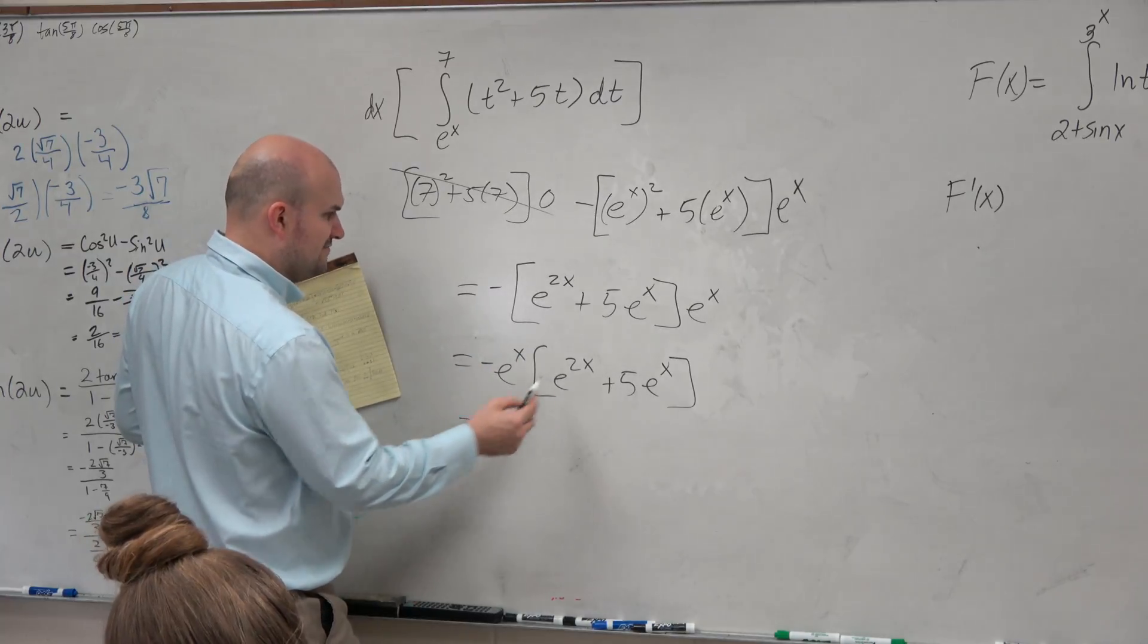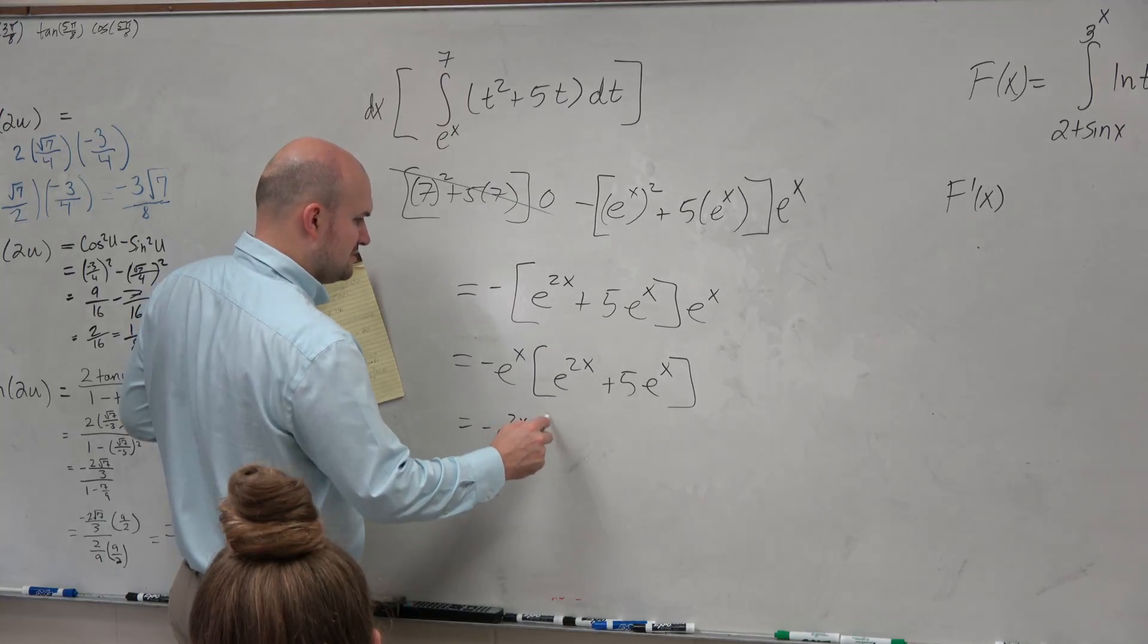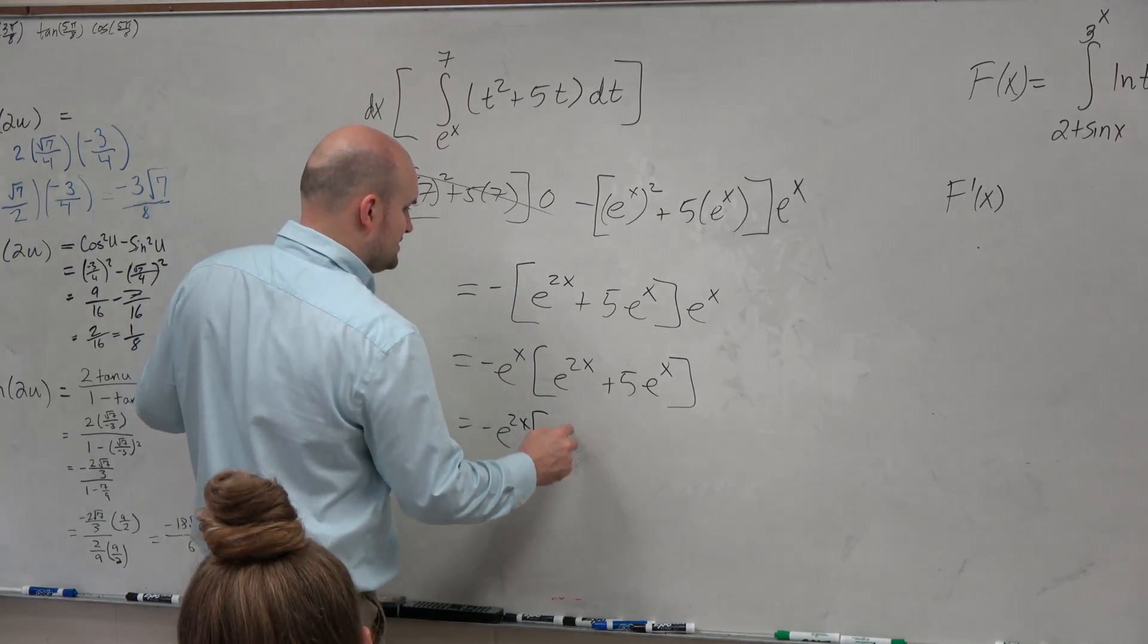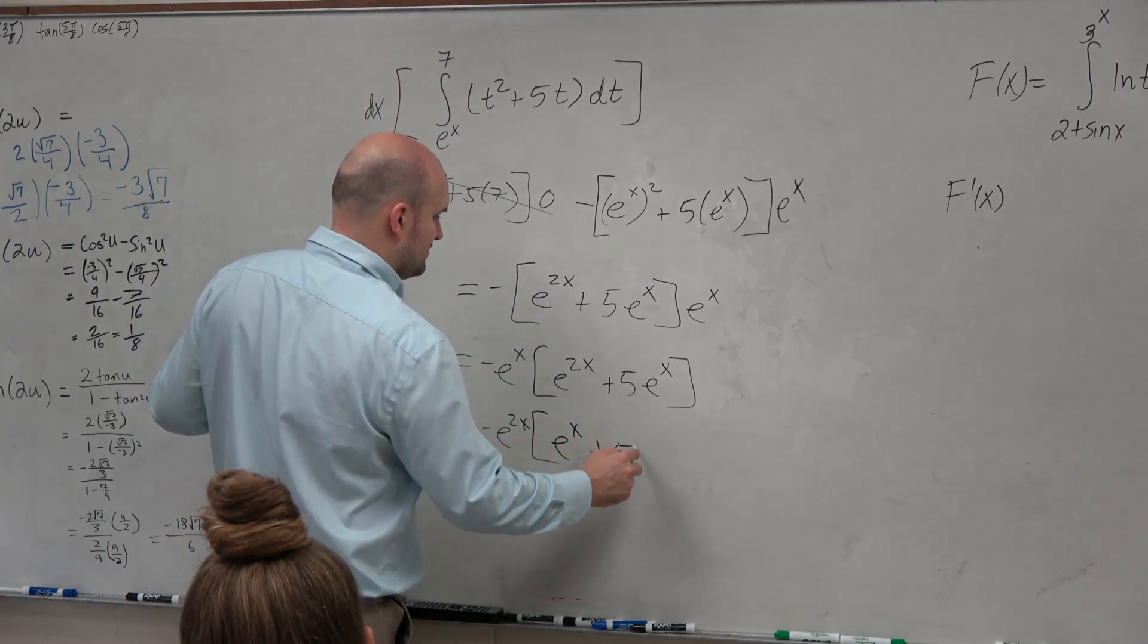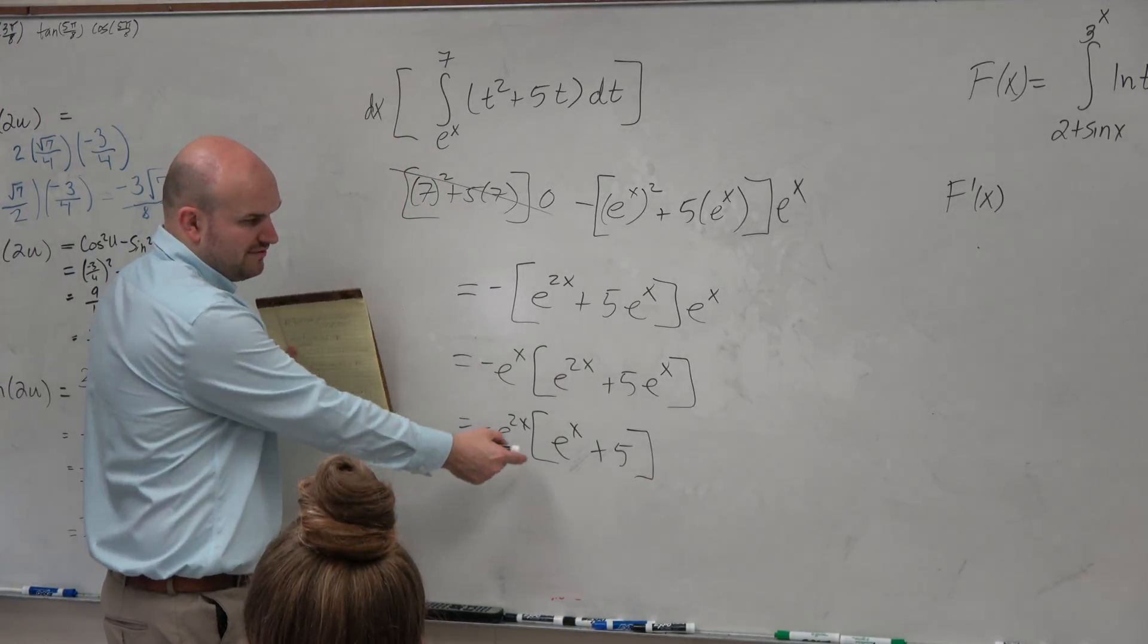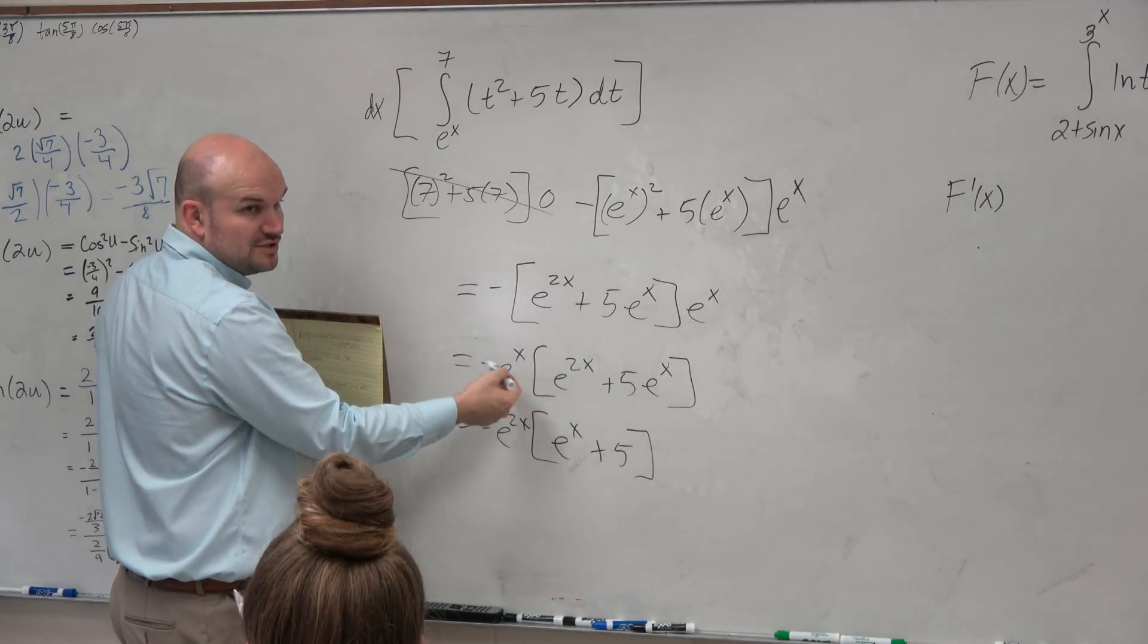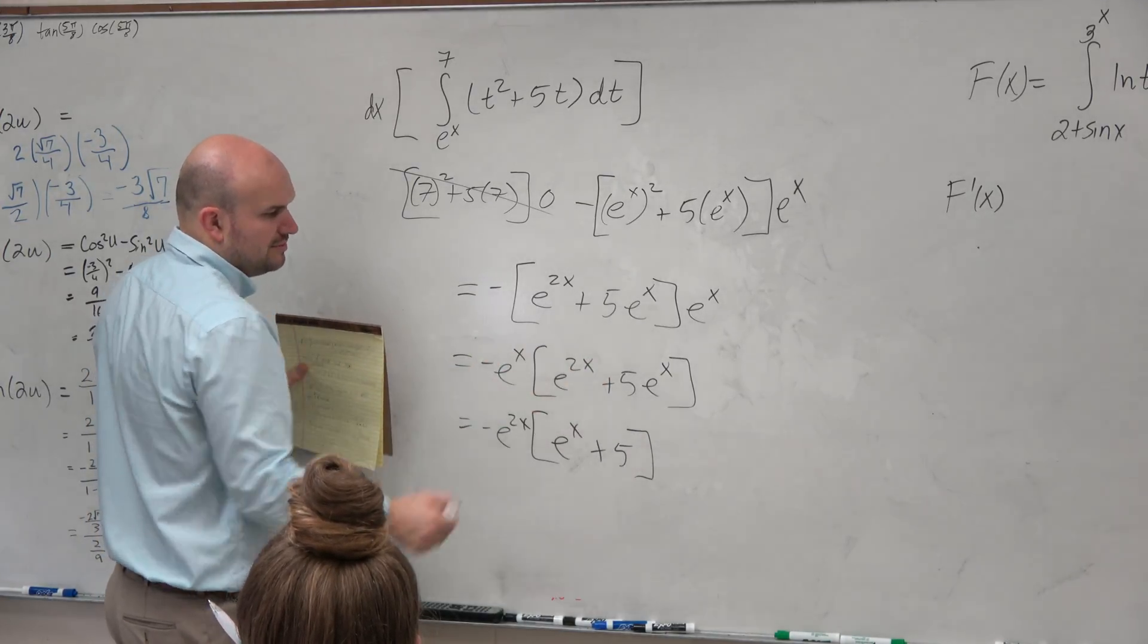I would say if you're going to factor that out, the only other thing that I would see would be a negative e to the 2x. That'd be e to the x plus 5. That's probably the only other way I'd see this. Like on a multiple choice test, they'd probably factor out another e to the x. So if you factor out another e to the x, then you'd have to multiply those two, and you'd get e to the 2x there, and it'd be good.